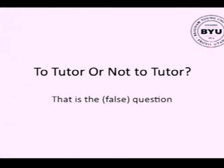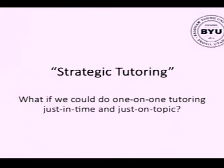For a number of years we've been asking: should we tutor or should we not? Should we use intelligent tutoring systems and artificial intelligence or not? Particularly in the educational technology field, which should we do? And this idea that you have to only do one or the other, I think, is a false question. An approach that we've become very interested in is what we call strategic tutoring — in other words, you tutor every student, but you only tutor them when they need to be tutored, and you only tutor them about the thing that they need to be tutored about.